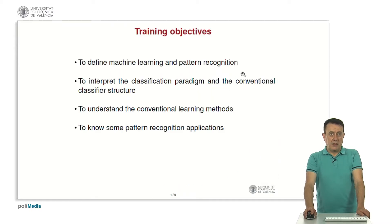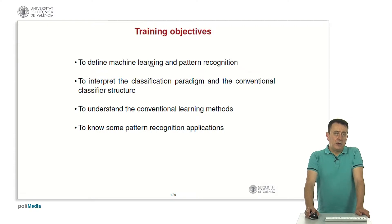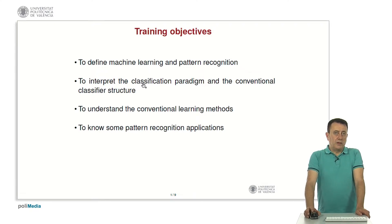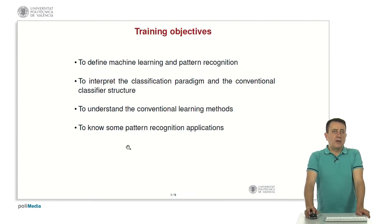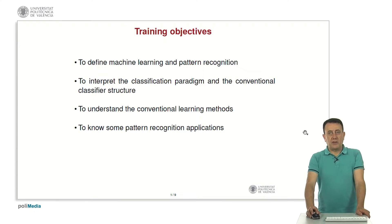There are four training objectives: to define machine learning and pattern recognition, to interpret the classification paradigm and the conventional classifier structure, to understand the conventional learning methods, and to know some pattern recognition applications.